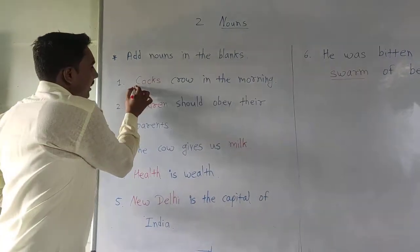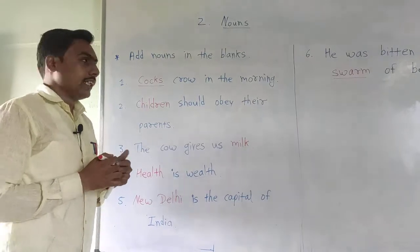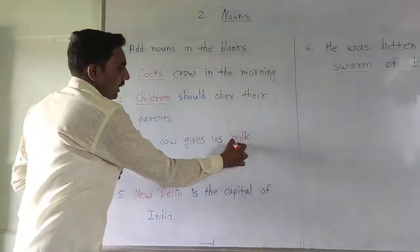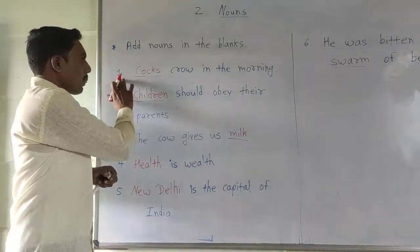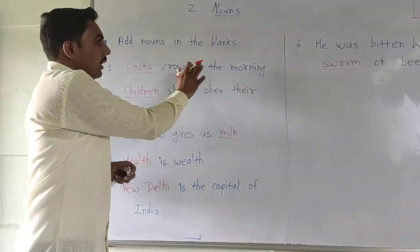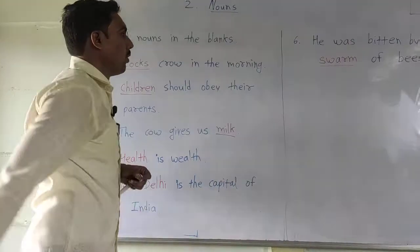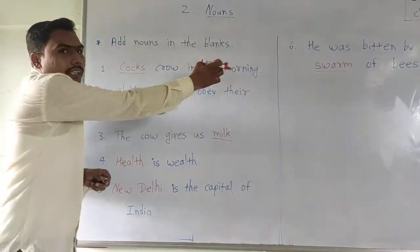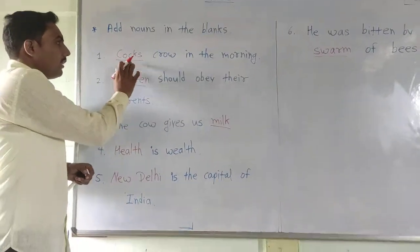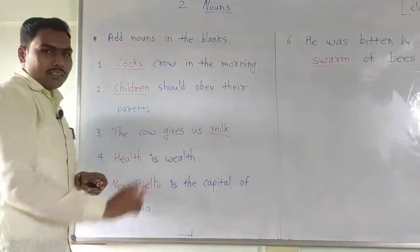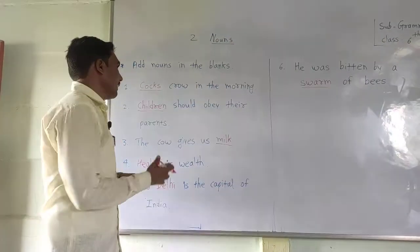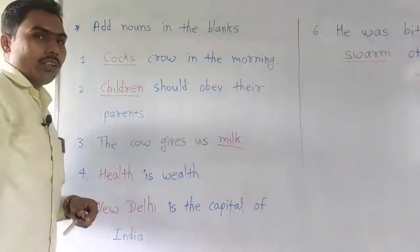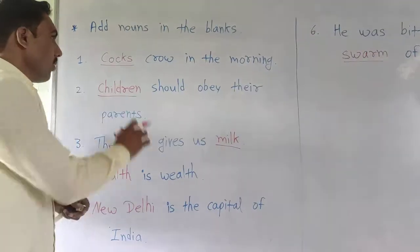You can add here 'cocks'. The red words are already filled here. Look here: dad dash crow in the morning — cocks crow in the morning. You can fill here 'cocks'. So according to sentence meaning, you can use here 'cocks'.